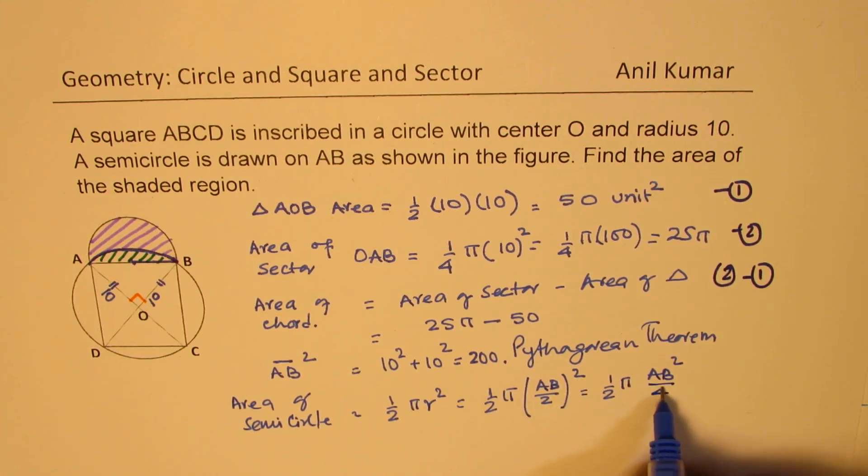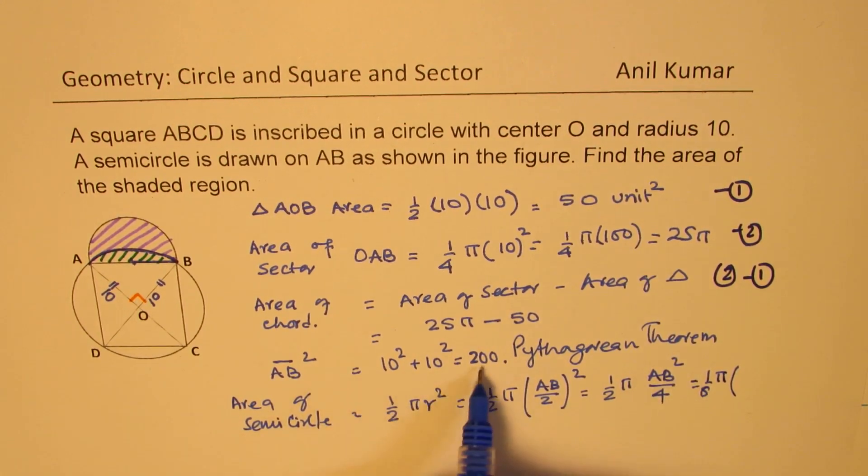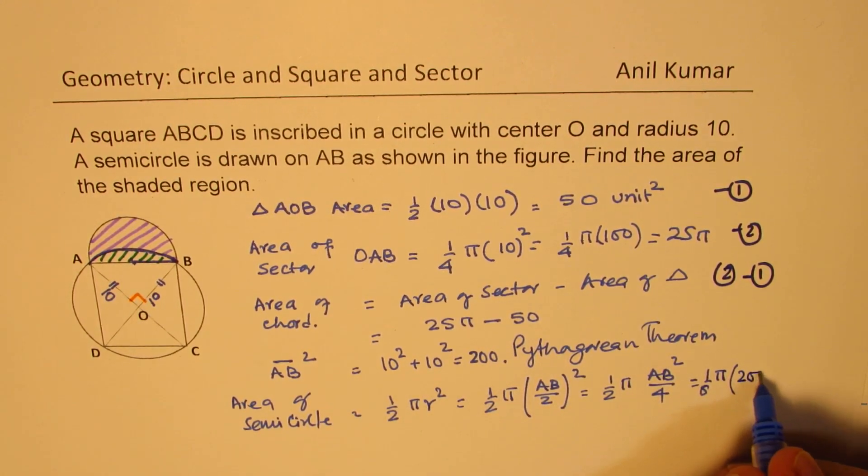2² is 4. So what we get here is half of π, AB² over 4, or 1/8 of π, and AB² is 200. Let's put 200 here.